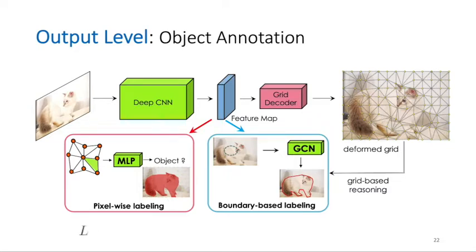The loss function to train the network is a combination of deformation loss and the segmentation loss, which is the cross entropy for grid-wise prediction.